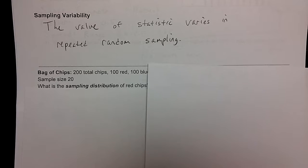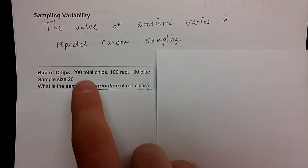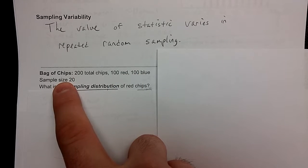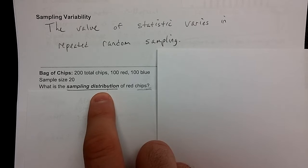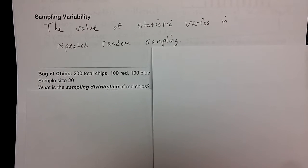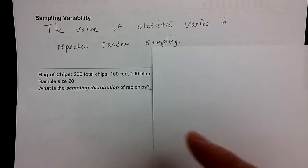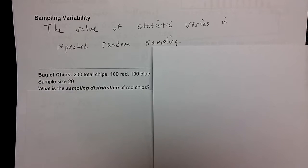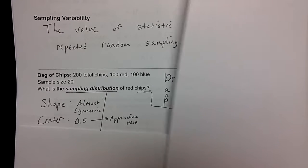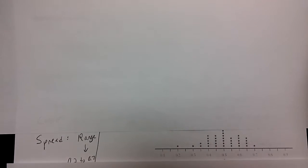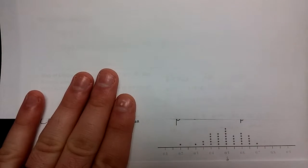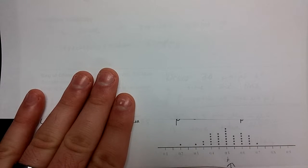So in this situation, we have a bag of poker chips or playing chips. There's 200 total, 100 are red, and 100 are blue. The sample size is 20. What is the sampling distribution of red chips? All you have to do to create that is to sample multiple times of size 20 of the chips, and then put them back. And what you get each time is the proportion of red chips, you just take the number of red chips and divide it by 20. So for example, if you sample 20 chips, and you get 12 red chips out of 20, your p hat value is 0.60. If you do that many times, you get this graph here.